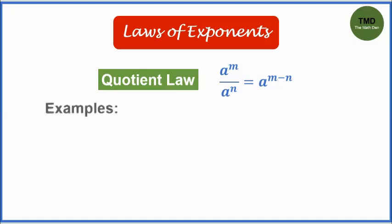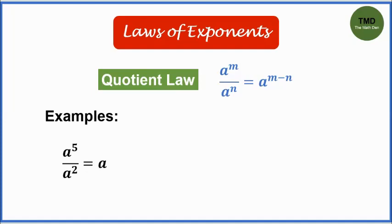Here are the examples. Example number 1: a raised to 5 over a squared is equal to a cubed. The common base a is copied, then the exponents are subtracted. 5 minus 2 is 3.